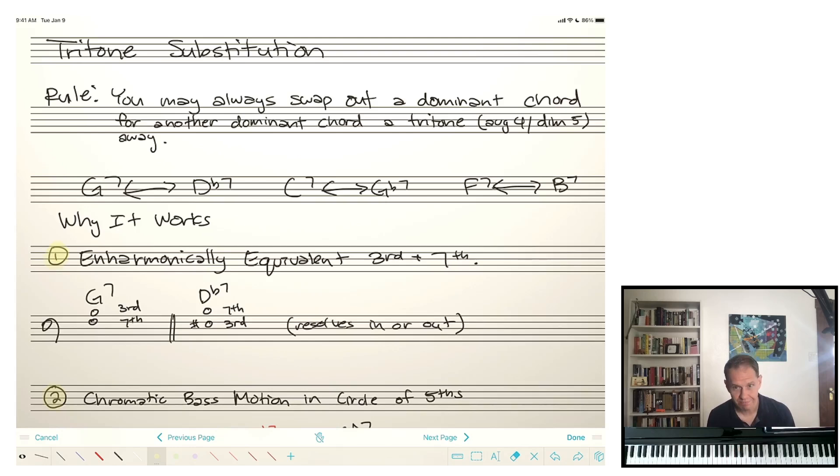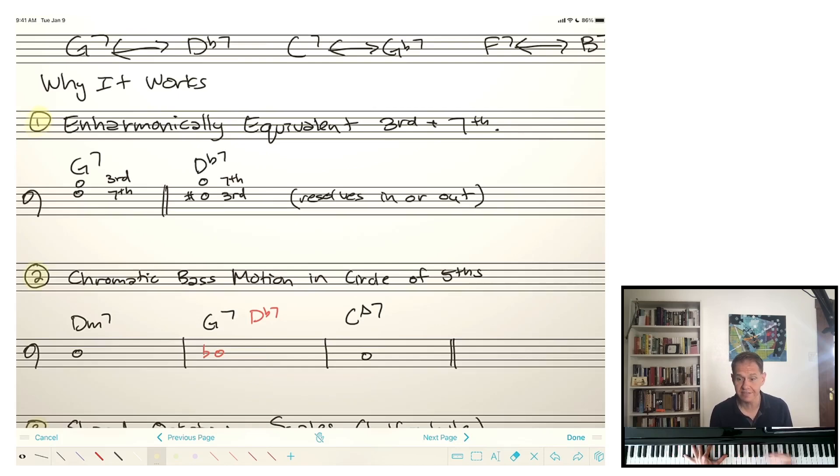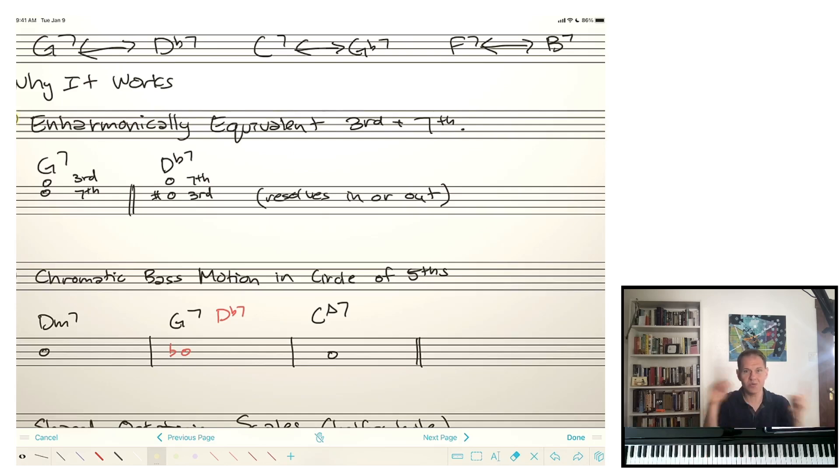Okay, so what this means is that we can swap out. When we see a G7, we can swap it out for a Db7. When we see a C7, we can swap it out for a Gb7. When we see an F7, we can swap it out for a B7. And of course, vice versa. For some reason, I chose some of the easiest chords, swapping them out for a harder chord. But it can work the other way too, of course.